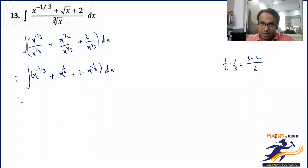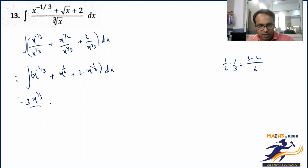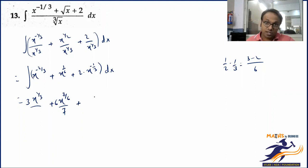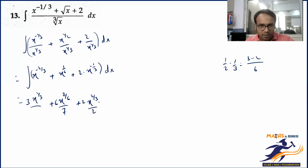The integration gives x to the power n plus 1. Just adding 1 to the exponent: 1/3 plus 1 gives 4/3, so 1/3 upon 4/3 — keeping 3 in denominator. Similarly, adding 1 gives 7/6 upon 7/6. And for the 2 — treated as a constant — adding 1 to minus 1/3 gives 2/3, and multiplied by 3. Don't forget the constant of integration C.